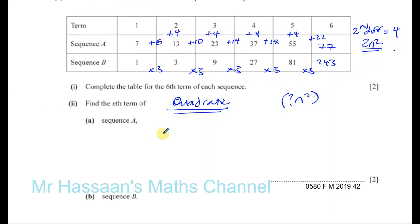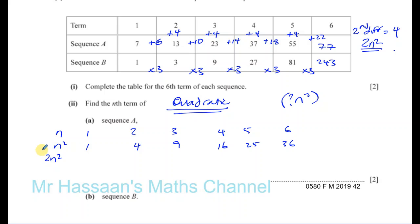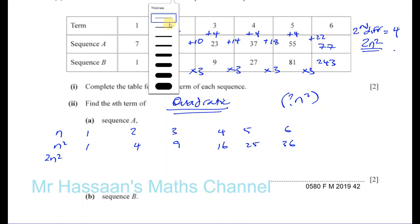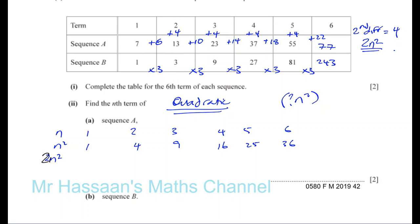So what I'm going to do is write down n: 1, 2, 3, 4, 5, and 6. Then I'll write down n squared: 1, 4, 9, 16, 25, and 36. Then I'll write down 2n squared, because we know it's got something to do with 2n squared. So 2n squared gives us: 2, 8, 18, 32, 50, and 72.